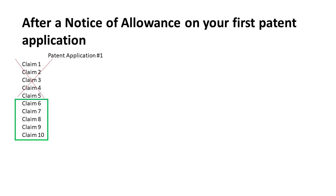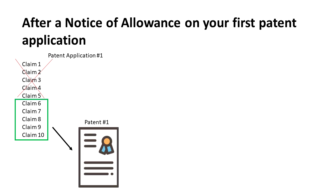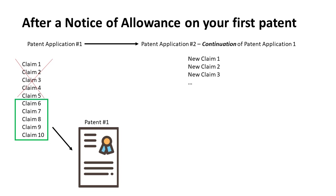This is a common scenario. In our example, claims six to ten are allowed while claims one to five are not. In response to this, a common strategy is to accept the allowed claims — which are six to ten in our example — and those claims will in a few months become part of patent number one.